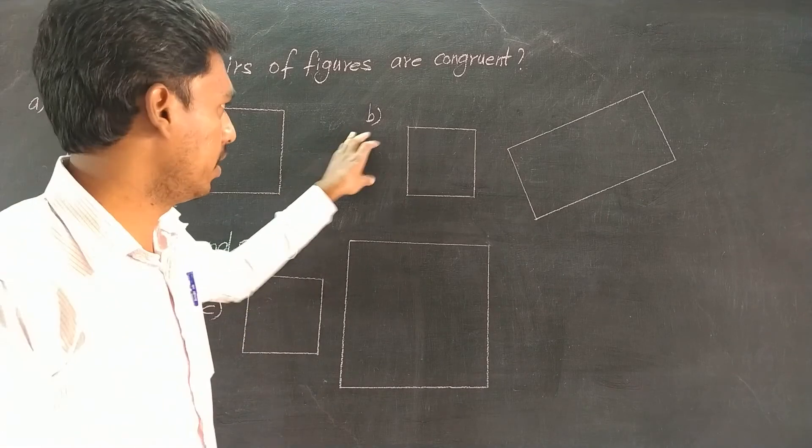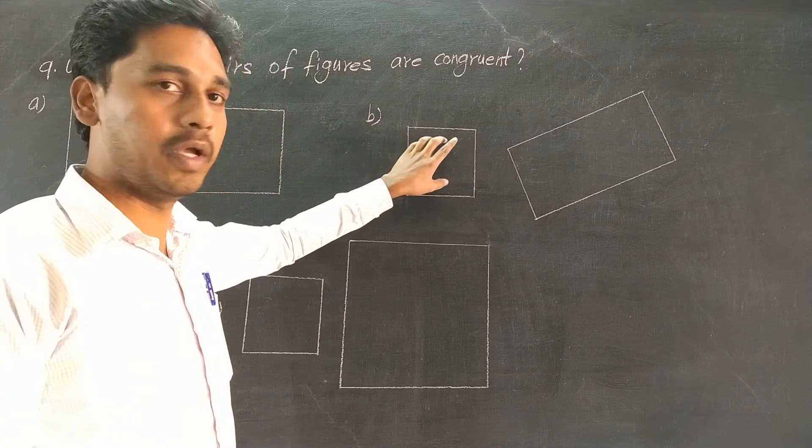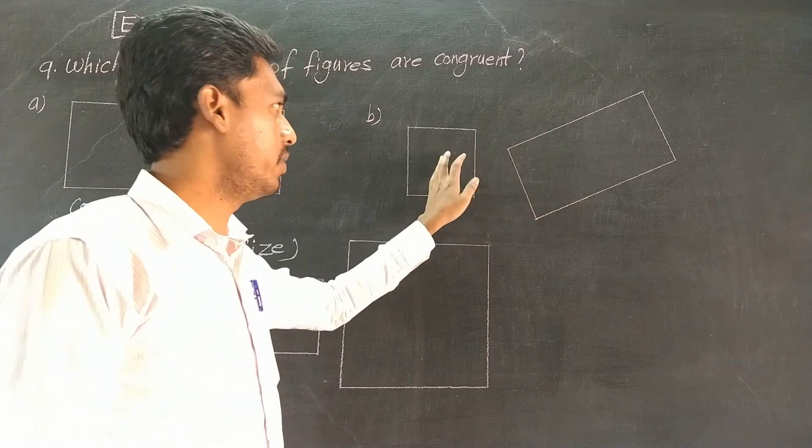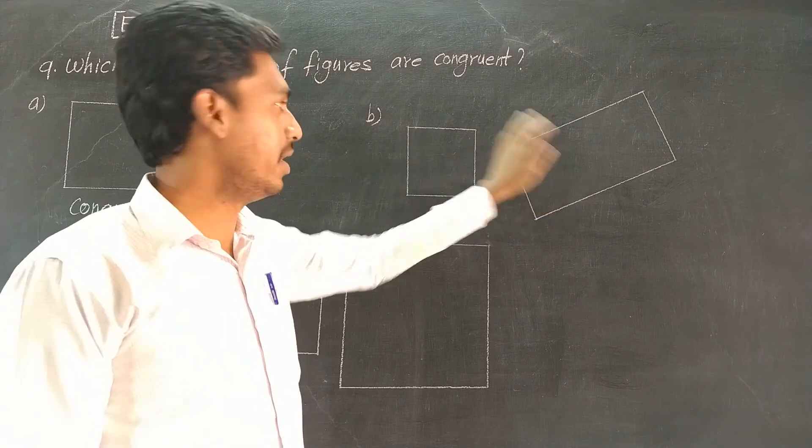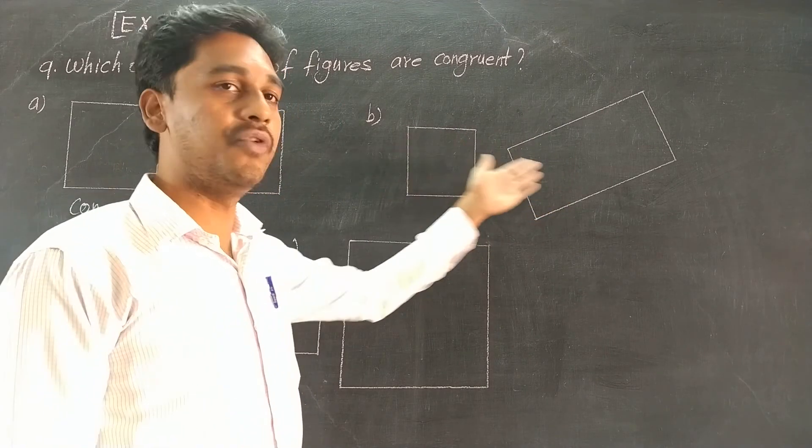B question. Here is a diagram, here is a diagram. The diagram is square, here is a rectangle. The first condition is shape. The shape is very different. Not congruent.